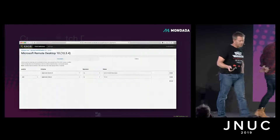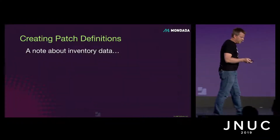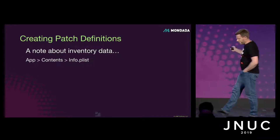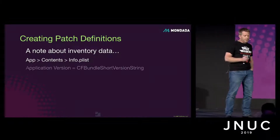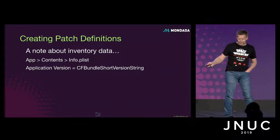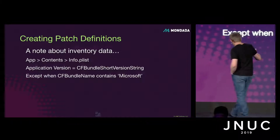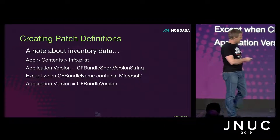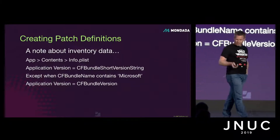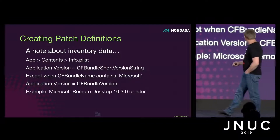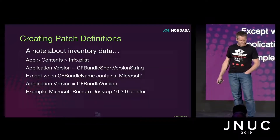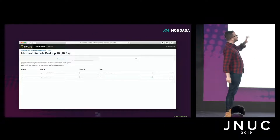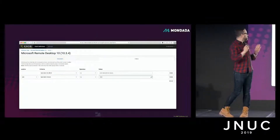Inside the application's Info.plist is where Jamf draws its application data from. Typically, the application version reported in the Jamf Pro UI is the CFBundleShortVersionString — except when the CFBundleName in that Info.plist contains the word 'Microsoft', in which case the application version equals the CFBundleVersion. This appeared in Microsoft Remote Desktop 10.3.0 or later. So despite what was said earlier, the CFBundleVersion is the better value to use here — this is a Microsoft-specific thing.